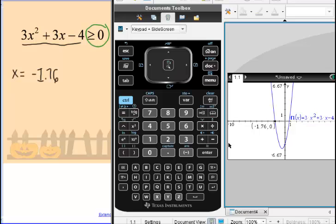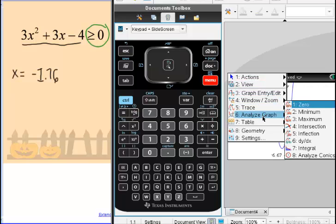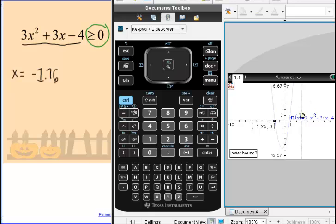Then do the same exact thing again for the right-hand endpoint. Go to menu, go to analyze graph, choose zero, and start from the left-hand side of that intercept and go to the right-hand side. What value do we get? We get the value 0.758.